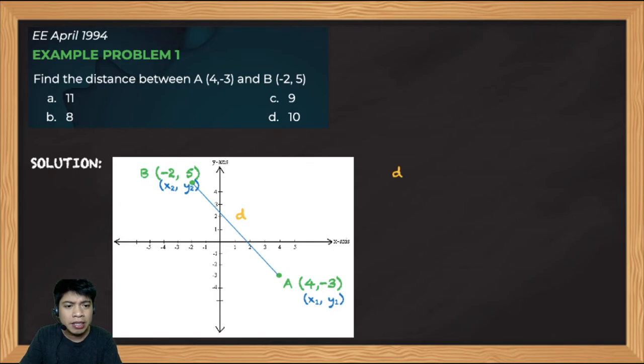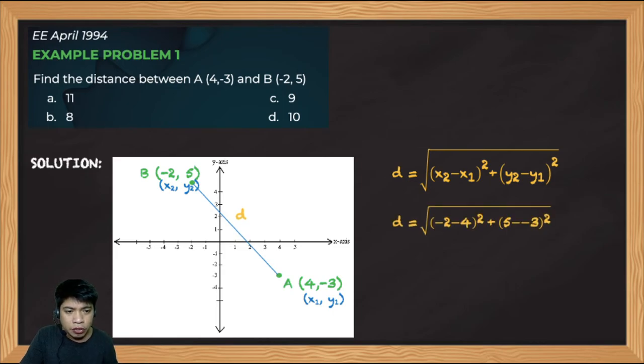Our formula is d equals the square root of x2 minus x1 squared plus y2 minus y1 squared. Our x2 will be negative 2, x1 will be 4, y2 is 5, and y1 is negative 3. When you input this to your calculator, the distance equals 10 units. The answer is obviously 10 units, letter D.